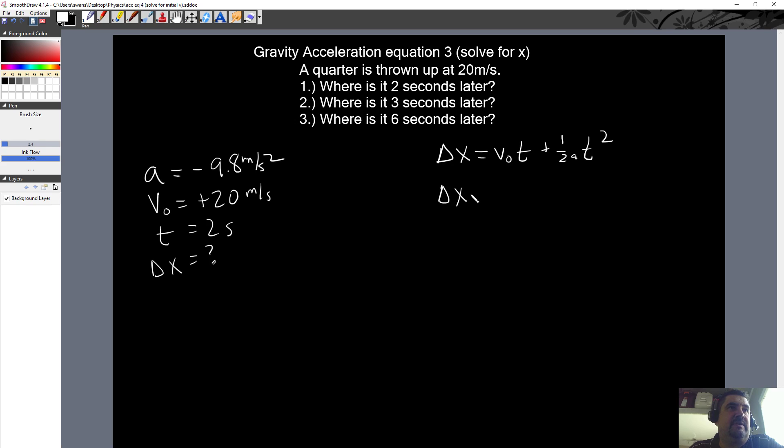We're looking for this, which is nice. It's already solved for it. Initial velocity is 20 times 2, that's the time. Plus one half a negative 9.8 times 2 squared. Don't forget that squared. It's times squared. Alright, so this is right here, 40 plus, and then let's do this on the side real quick.